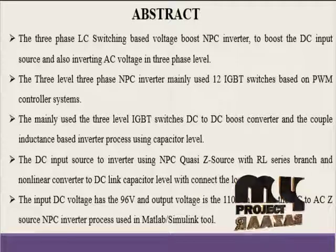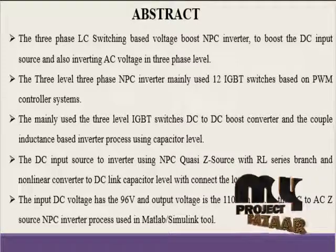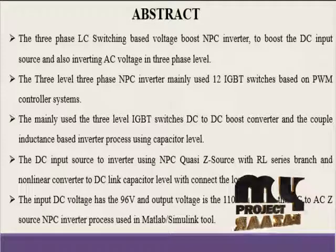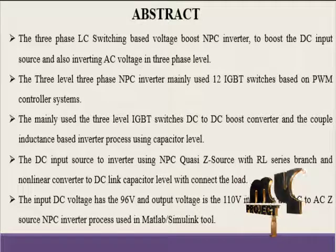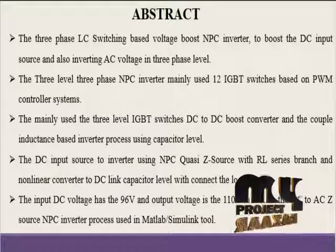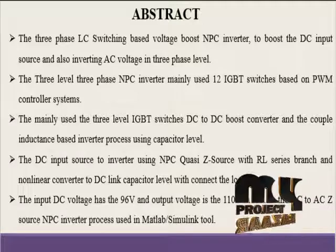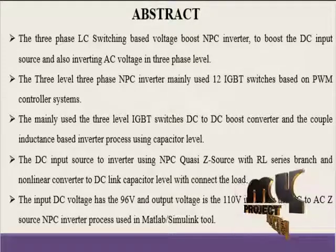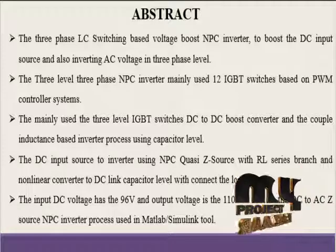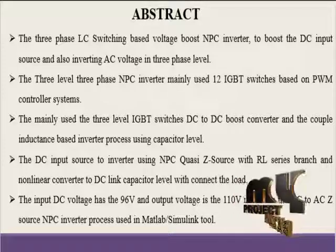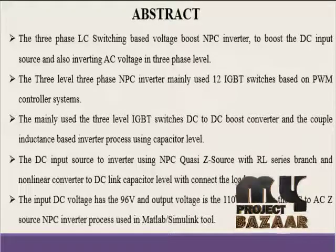Finally, we are getting the DC link capacitors connected to the load. This source is important for the DC to AC inverter process, mainly for the NPC inverter. We have 2 types of input: the source gives 96V and the output is 110V AC. Finally, we have designed the NPC inverter using MATLAB Simulink.